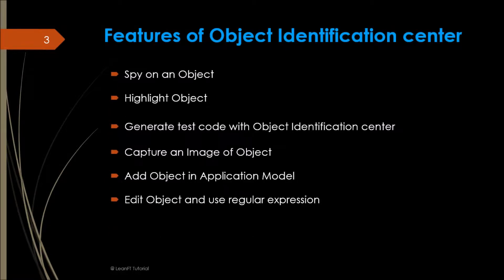So let's talk about features - what features does object identification center have? The first is spy on the object. We can spy on the object, we can highlight the object, we can generate the code, we can capture the image of that particular object, we can add that object into the application model, and we can edit the object and use regular expressions.